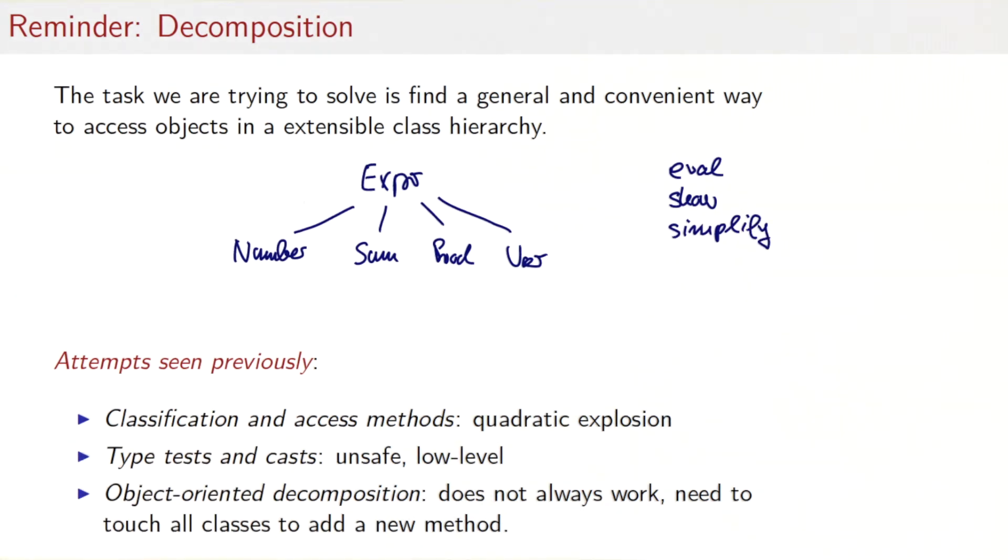We have seen three attempts previously and they all had some shortcomings. The first one was the classification and access methods, and there we observed a quadratic explosion of the methods we had to write. In this class hierarchy here there were 40 methods that we had to write. The second one was type tests and type casts. That did the job, but it was unsafe and low level. And the third one was object-oriented decomposition. That worked great for evaluation, worked also great for show except that we had to touch all the classes to add a new method, but it didn't work for methods such as simplify that require non-local knowledge of the tree.